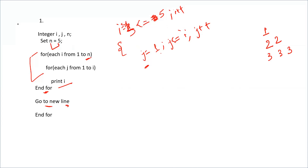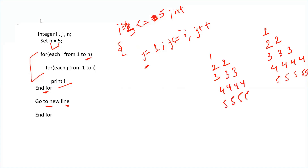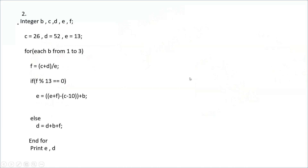For i=4, the inner loop runs 4 times printing 4 four times. For i=5, less than or equal to 5 is still true, so the inner loop runs 5 times printing 5 five times. So the full output is: 1 / 2 2 / 3 3 3 / 4 4 4 4 / 5 5 5 5 5. When you understand the repetition pattern, you can solve this very quickly just by looking at the question.